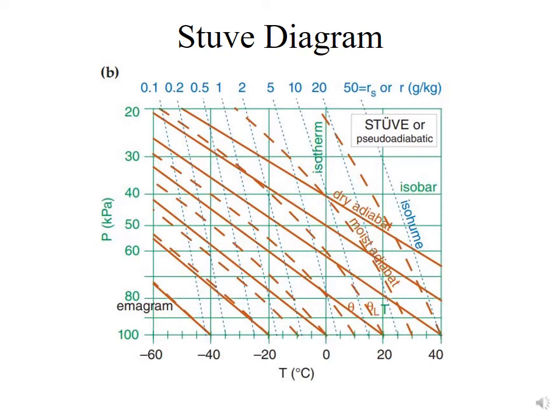This diagram has a simplicity in that it uses straight lines for the three primary variables: pressure, temperature, and potential temperature. The isotherms are straight and vertical.